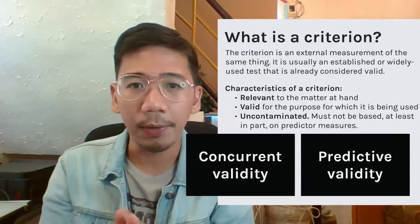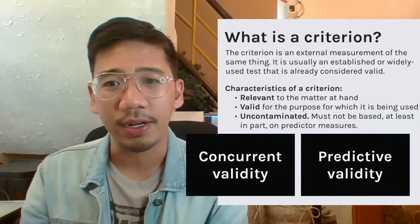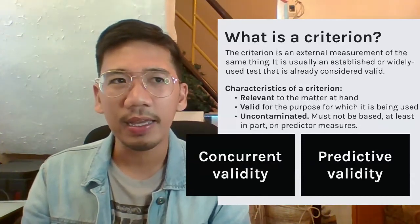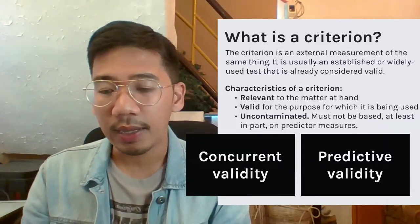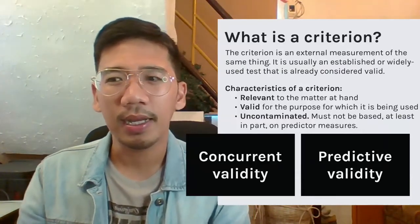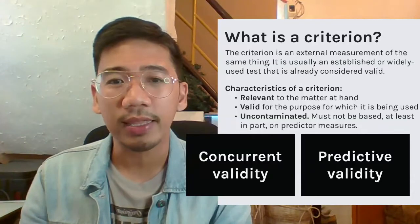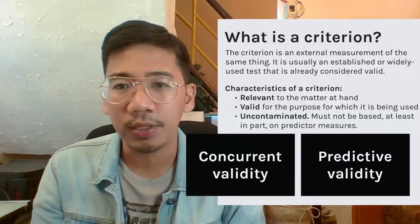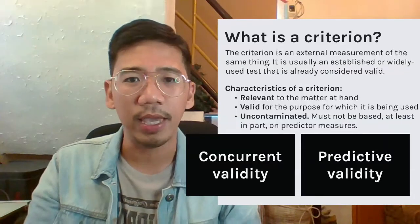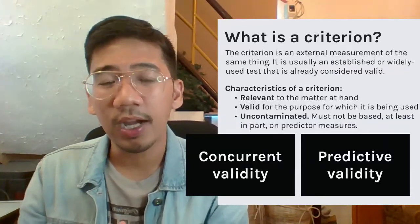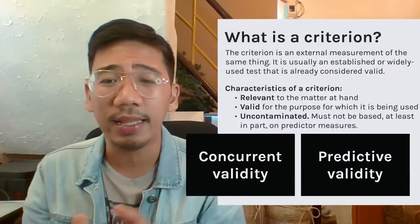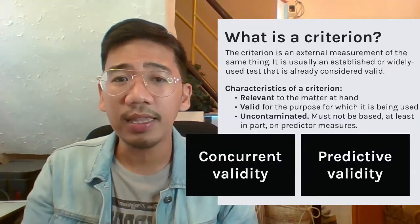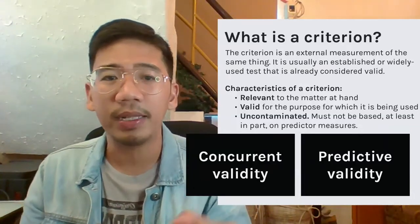In some cases where there is no existing tool to measure the same construct, it is possible to use a tool that measures a construct highly correlated with the one you want to measure. A good criterion has several characteristics: first, it is relevant to the matter at hand; second, it is valid for the purpose for which it is being used; and third, it should be uncontaminated — meaning it should not be based, even in part, on a predictor measure.